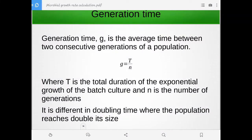We have another value which is generation time. Some books will talk about generation time. For clarity, generation time is the average time between two consecutive generations of a certain population. We have g = t / n, where t is the total duration of the exponential growth of the bacterial culture and n is the number of generations. Generation time is different from doubling time — doubling time is where the population doubles in size, while generation time is the time difference between two consecutive generations of your population.